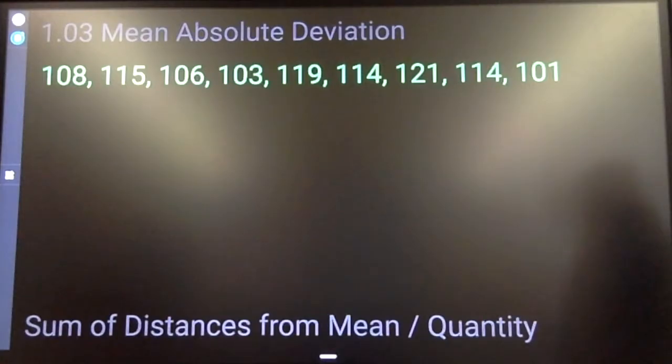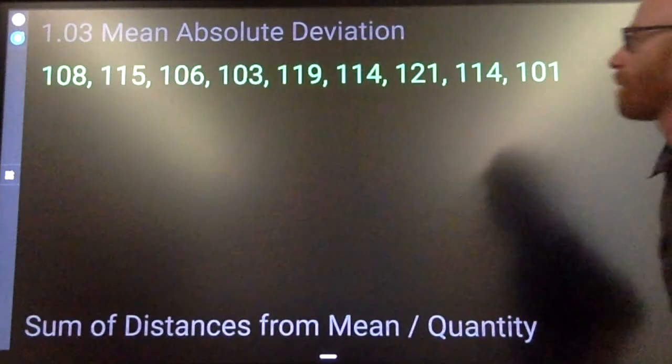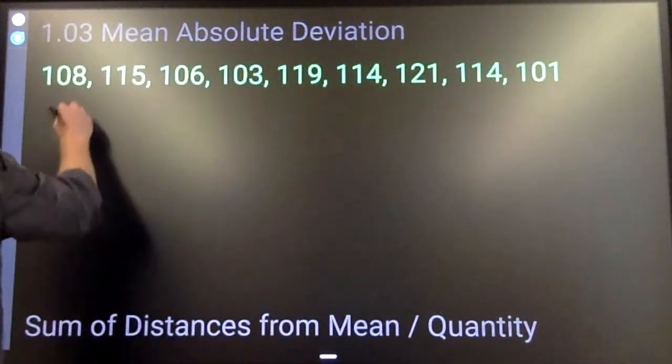Mean absolute deviation is the sum of the distances of each element from the mean divided by the quantity of items. In order to find mean absolute deviation, first you're going to need to find the mean.